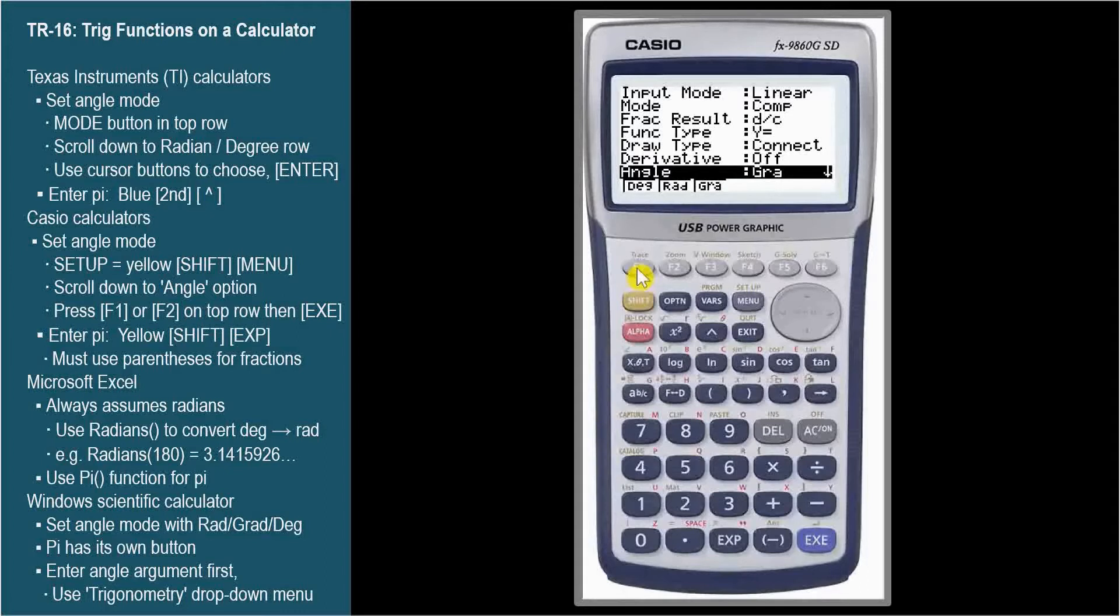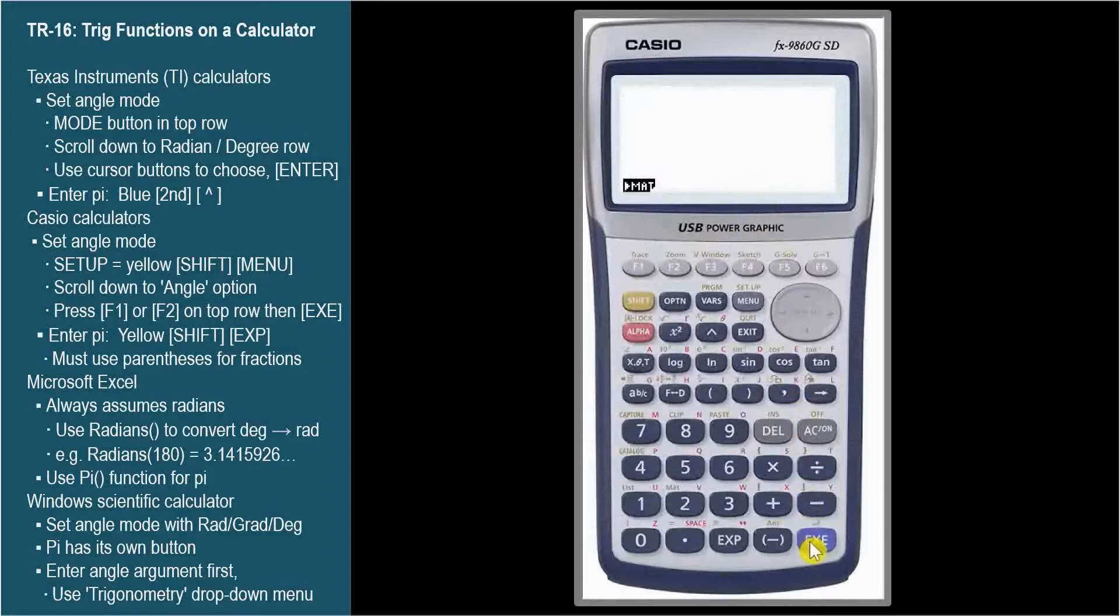We want sine 30 degrees. So press F1 for degree mode, then Exit to exit Setup. Press the Sine button. The Casio gives us a space after the function name instead of parenthesis. No problem. Let's enter 30 and press Execute. We get our answer 0.5.